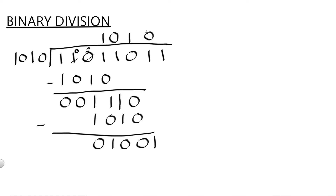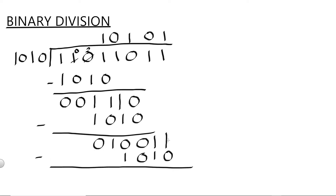Bring down our last digit which is 1, so this becomes 10011. Is 10011 greater than or equal to 1010? The answer is yes, so this is 1. And 1 multiplied by 1010 is equal to 1010. Then proceed to subtraction. 1 minus 0 is equal to 1. 1 minus 1 is equal to 0. 0 minus 0 is equal to 0. 0 minus 1 — we can't do 0 minus 1, so we need to borrow from here. So this becomes 0 and this becomes 2. 2 minus 1 is equal to 1. Just ignore the 0. So our answer is 10101 with a remainder of 1001.